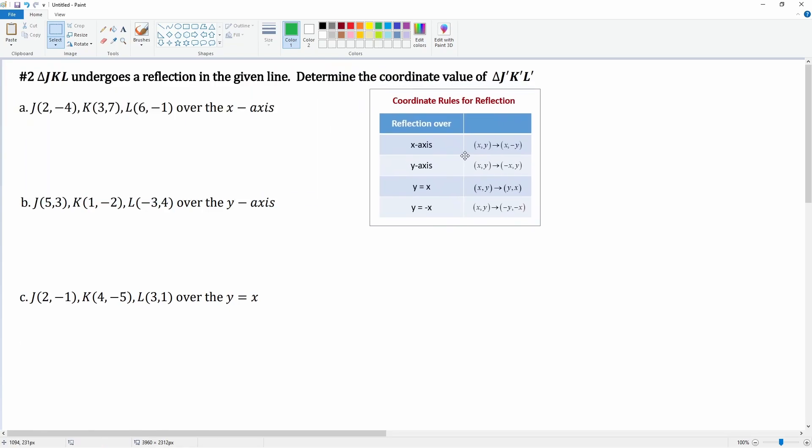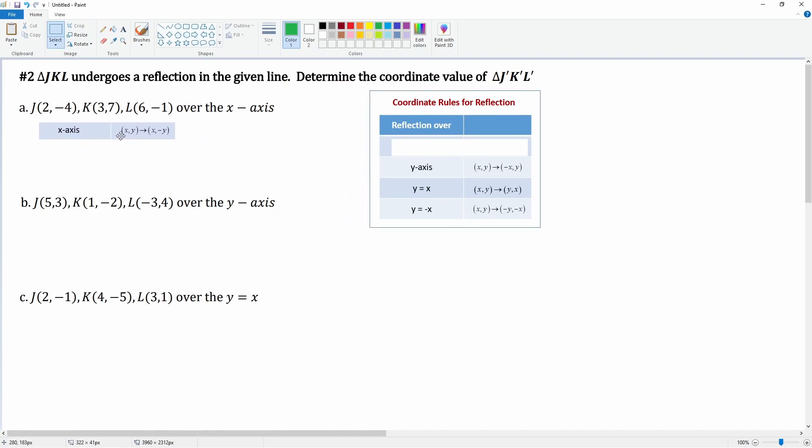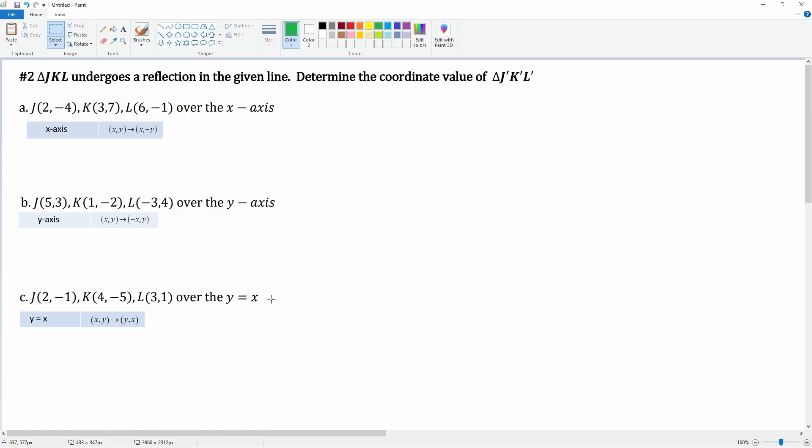All right, so what I have here is the rules from before that we should have memorized for the final. For part a, it asks us to look at the x-axis, so I'm going to grab that rule here. For b, it says the y-axis, so I'm going to grab the rule here. And then for the last one it is y equals x, so I'm just going to grab the rule here.